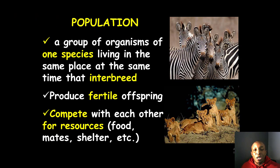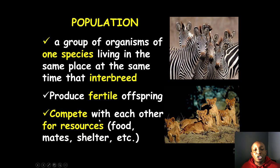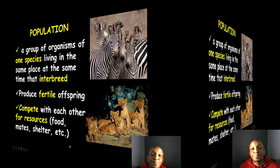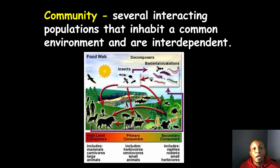A population is a group of organisms of one species living in the same place at the same time. They interbreed and produce fertile offspring — meaning their offspring can also have offspring of their own. They also compete with each other for resources such as food, mates, shelter, and other items.